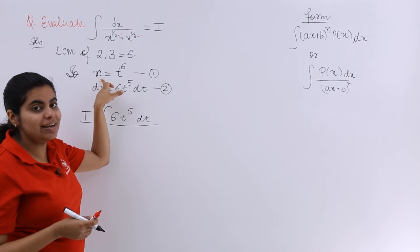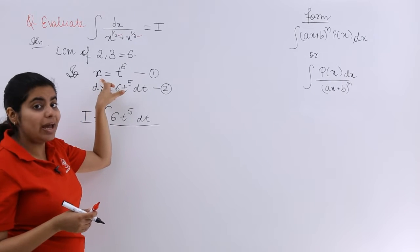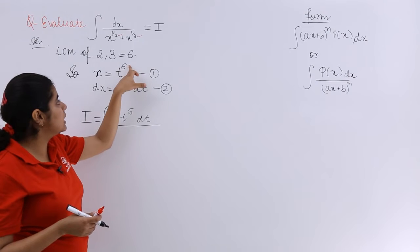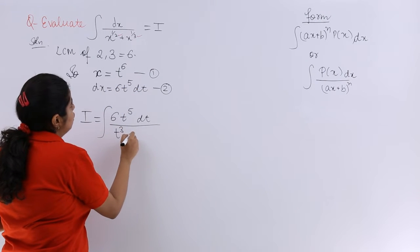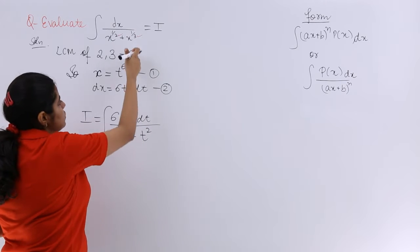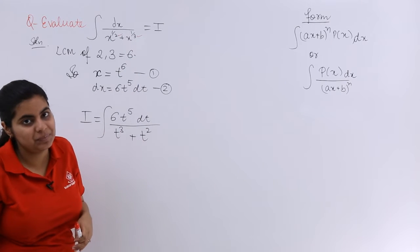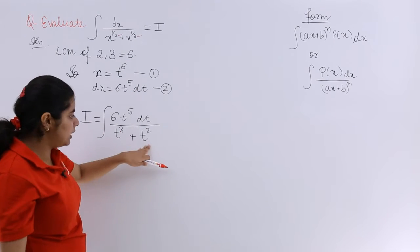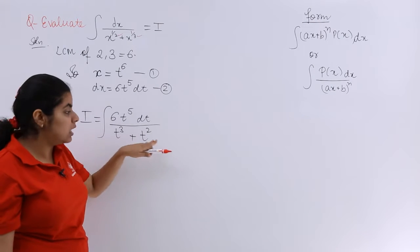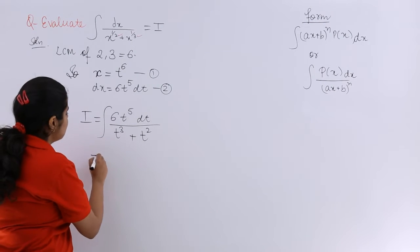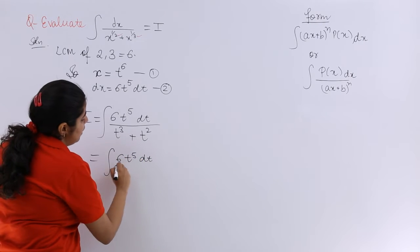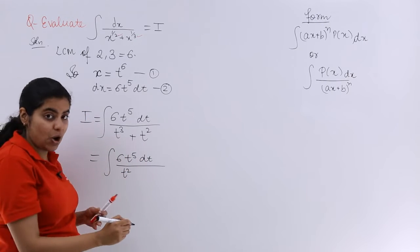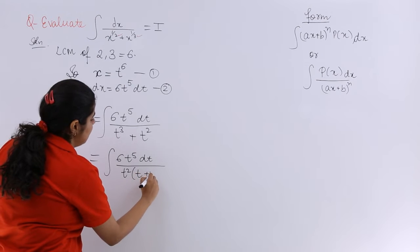Now x is your t raise to the power 6. So x raise to the power 1/2 is t raise to the power 6 multiply 1/2 which is nothing but t cube. And similarly x raise to the power 1/3 is t square. Now see, now t square is among the, can be taken as the common amongst these. So it is 6t raise to the power 5 upon t square as common and inside it is left as t plus 1.